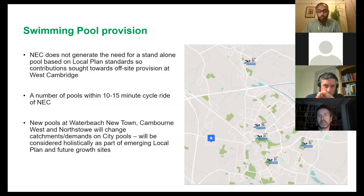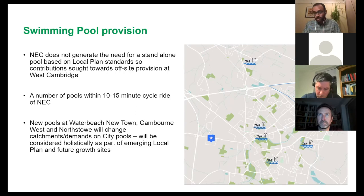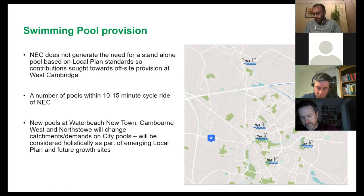Finally, on swimming pool provision: based on Sport England models, North East Cambridge doesn't generate the need for an on-site pool, so developer contributions will be sought to deliver a new pool at West Cambridge. However, there are already five pools within a 10 to 15 minute cycle of North East Cambridge — Impington Sports College, Jesus Green Lido, Chesterton Sports Centre, Abbey Leisure Complex, and Parkside pools. As part of the local plan, we'll also look at how new pools at Water Beach and Northstow will affect existing pools in the city, and consider swimming pool provision in the round across all local plan sites.